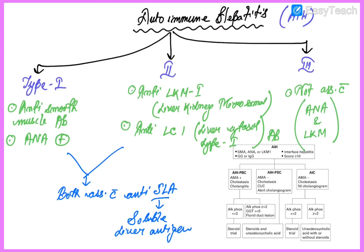Autoimmune hepatitis can be classified into three types: type 1, type 2, and type 3. Type 1 comprises anti-smooth muscle antibody and anti-nuclear antibody positive. Type 2 involves anti-LKM1, that is liver-kidney microsomal antibody, and anti-LC1, that is liver cytosol type 1 antibody.